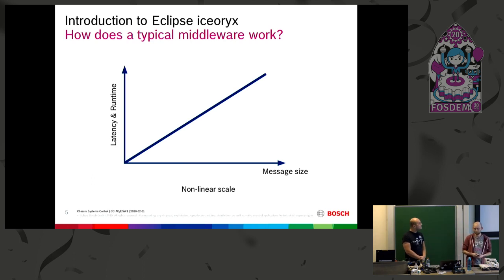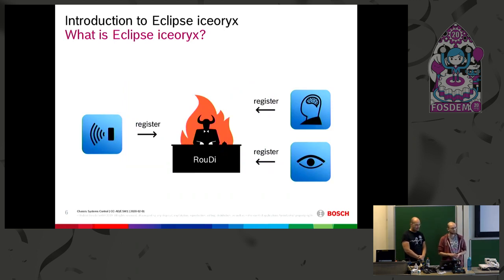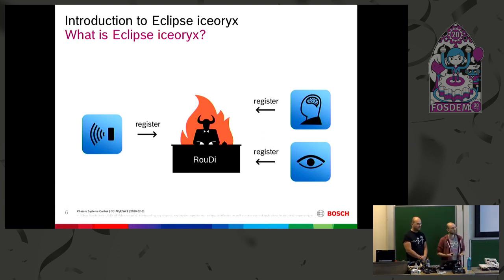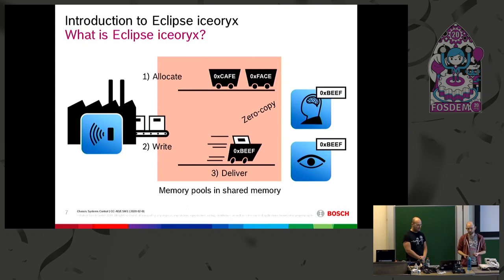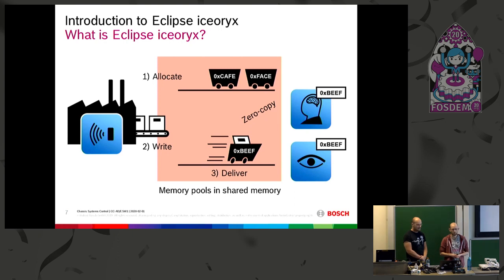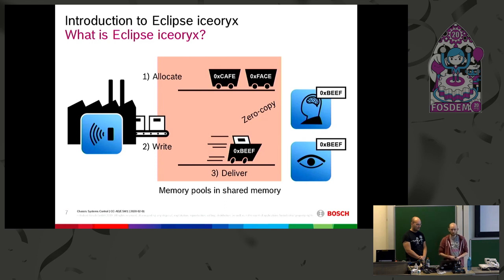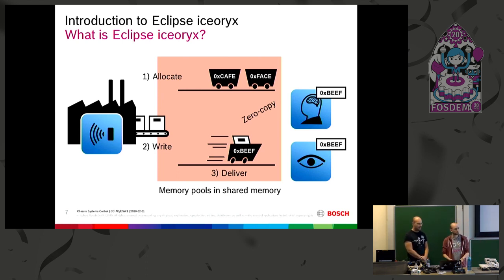This is where Eclipse Iceoryx comes in. Running the same example with Iceoryx: first, all apps register with our daemon called Roudi. After registration, communication runs completely independent from Roudi. The apps map a shared memory segment — the red box you see here. Inside this shared memory we have memory pools, which you can think of as wagons. The publisher requests ownership of a wagon, the data package is written into it, and we deliver a pointer to the subscribers. This is what we call true-zero-copy — data is only written once and never copied.